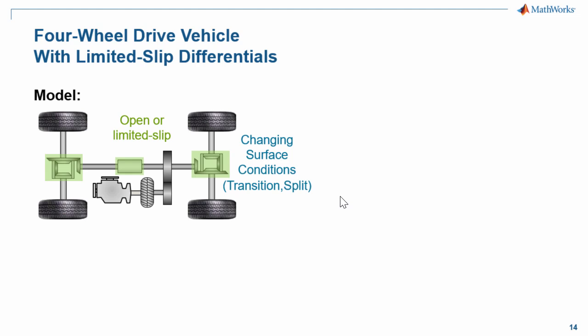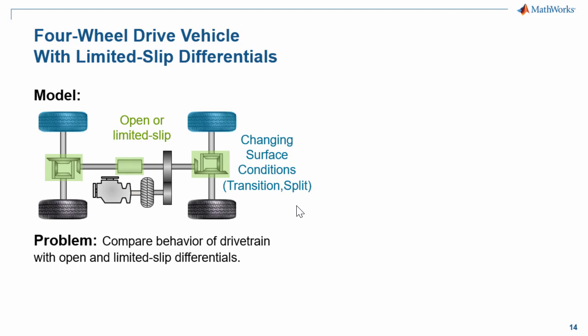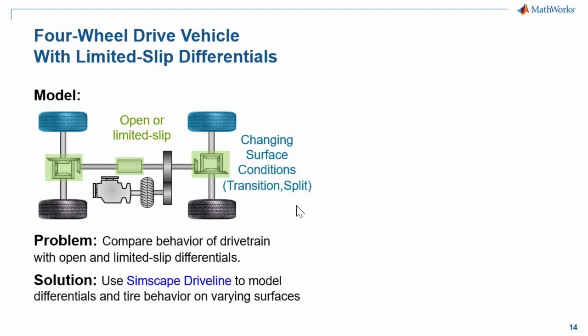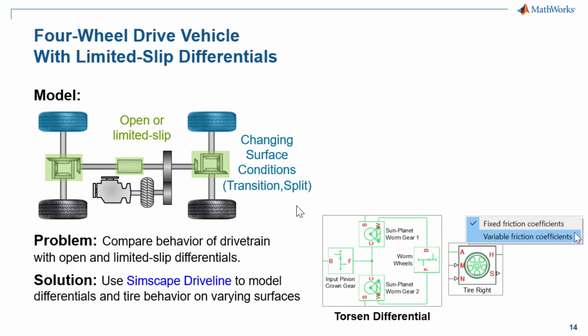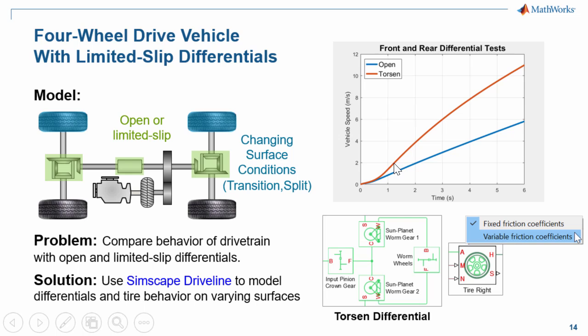We will also run a split test where two of the wheels are on ice and the other two are on a high friction surface. In this test, the front and rear differentials will have the largest effect on the drivetrain performance. We will compare the behavior of the drivetrain with two different types of differentials using Simscape Driveline, see a model of a limited slip differential, and see how we can vary the coefficient of friction at the wheels based on vehicle position. The limited slip differentials will allow the vehicle to accelerate much faster than the open differentials.